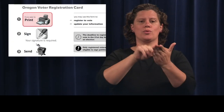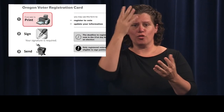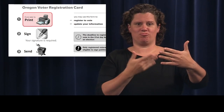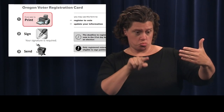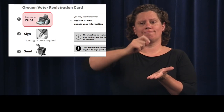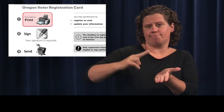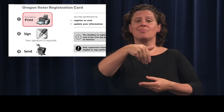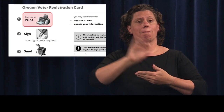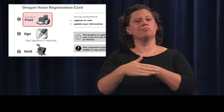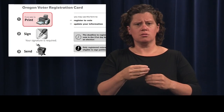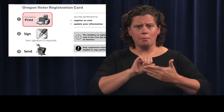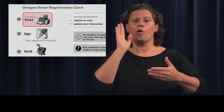A voter registration card with your information will display. Print, sign, and then mail the form to your county elections office. The address for this office will be printed on your voter registration card based on your address.